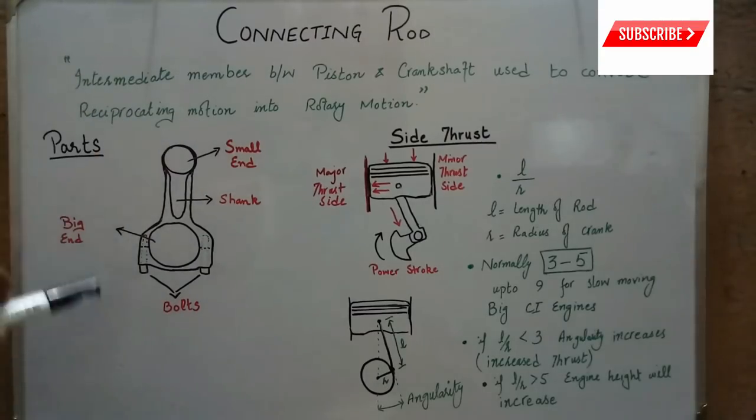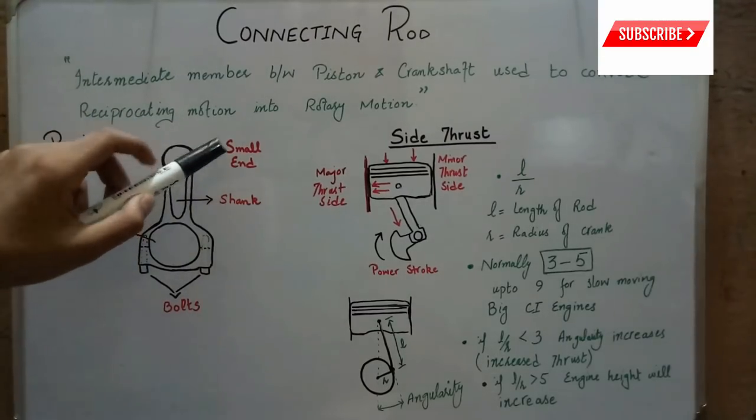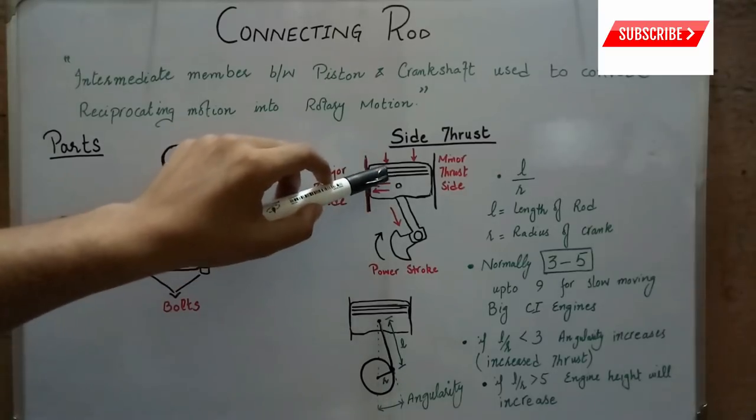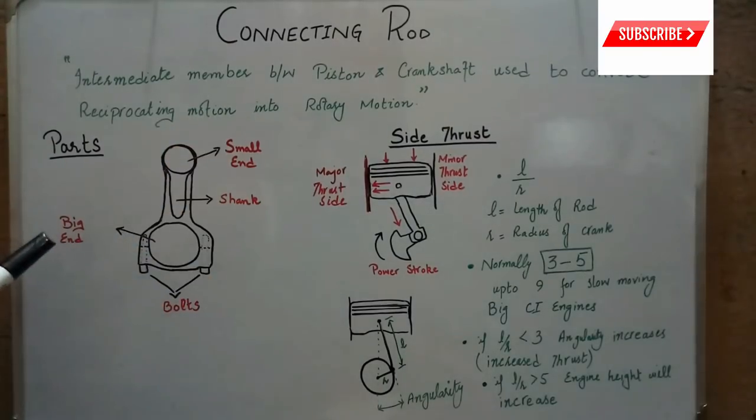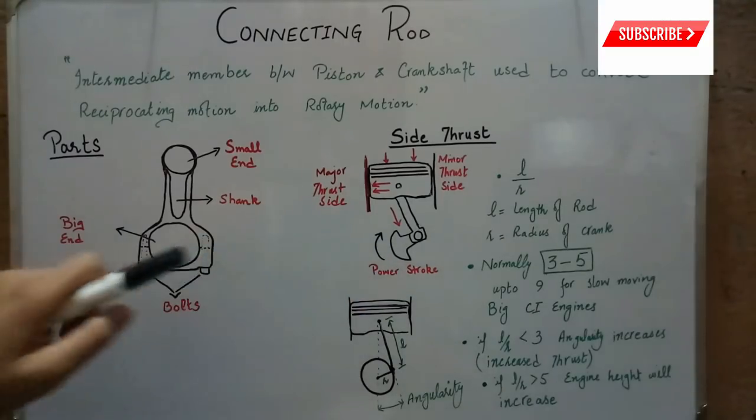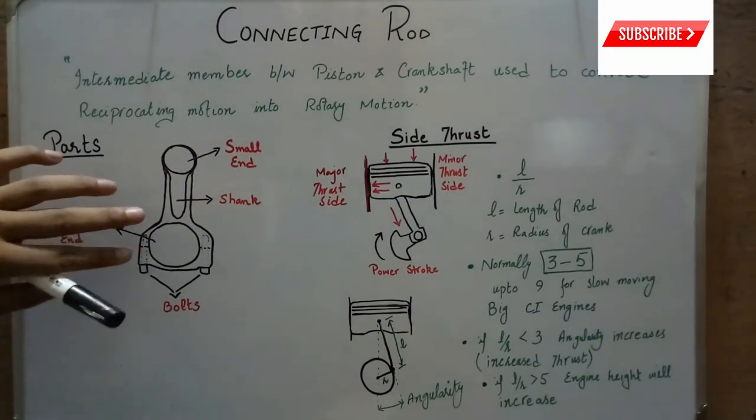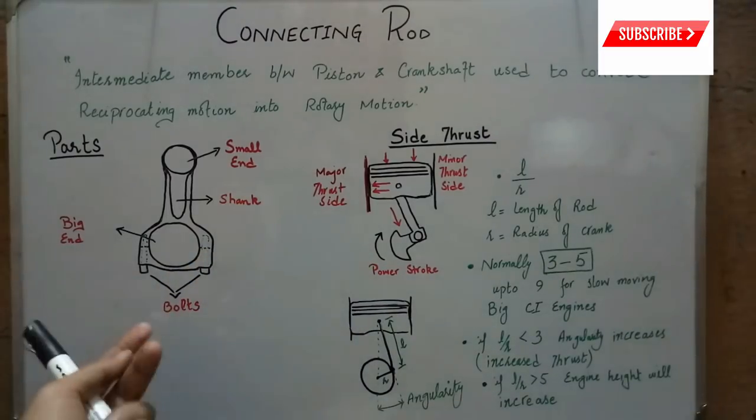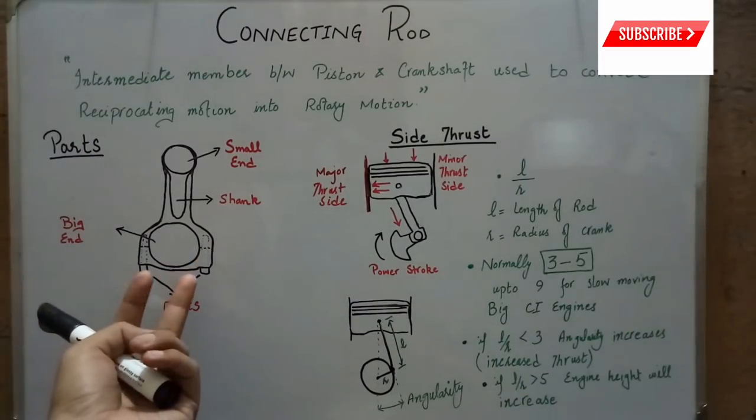In any connecting rod, there is a small end by which it is connected with the piston with the help of gudgeon pin. Then there is a big end by which it is assembled with the crankshaft. The big end is divided into two parts for fitting purposes and then tightened with these two bolts.